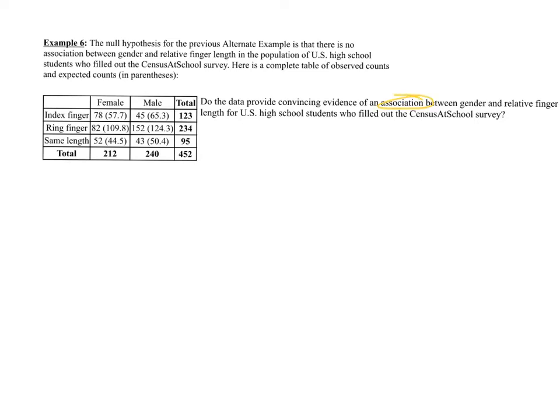Key word here is association. If you see the word association, that's very likely a chi-squared test of independence. If they say, do the data provide convincing evidence, that's a sign of a hypothesis test. Association is almost always a sign that it is a chi-squared test of independence.